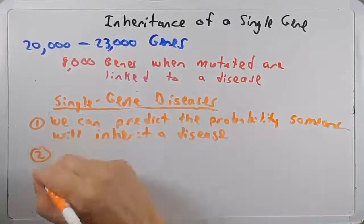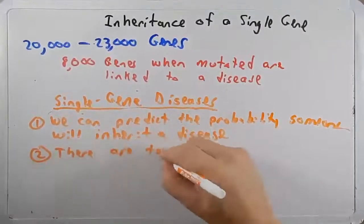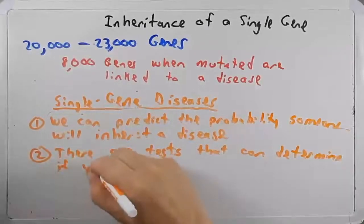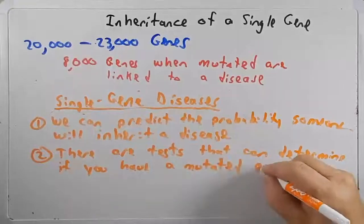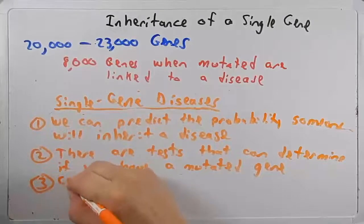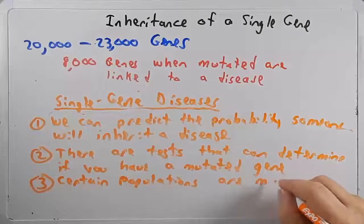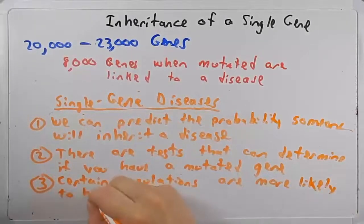So this is based upon probabilities. The second one is because we understand genetics at more of a molecular level today than we did, of course, say 50 or 100 years ago. There are tests that can determine if you have a mutated gene.